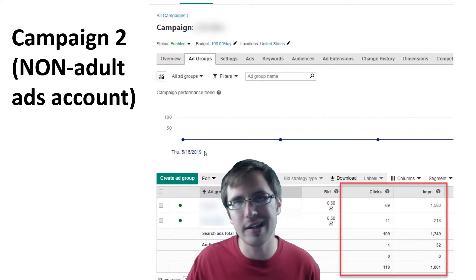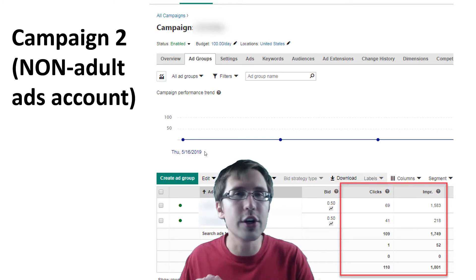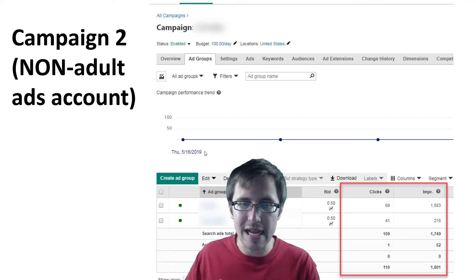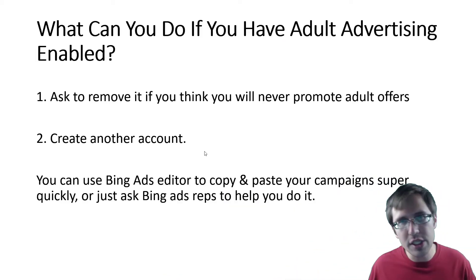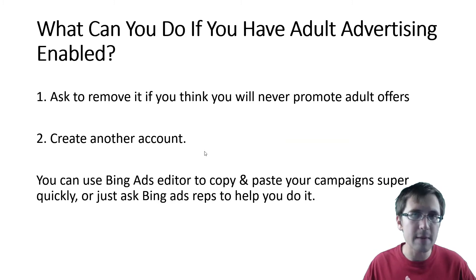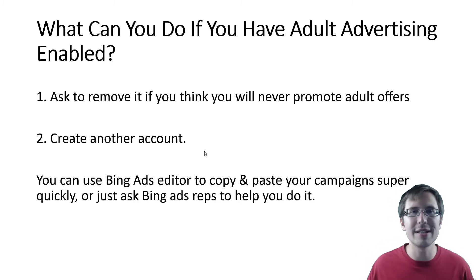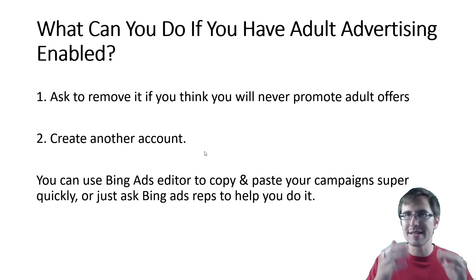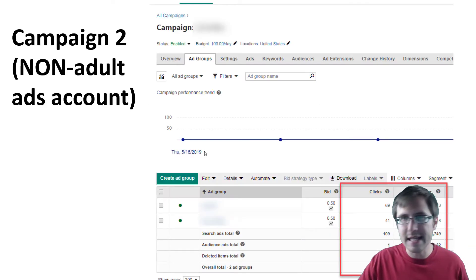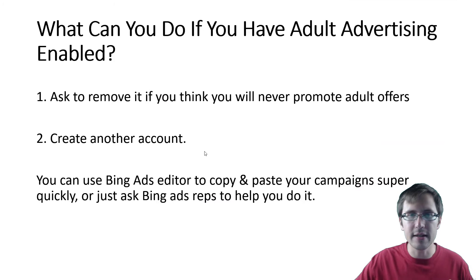If you're not promoting adult offers, or maybe you are, make sure you have a non-adult advertising account enabled. The two things you can do if you have adult advertising enabled: one, you can ask the Bing reps to remove it. Follow the same process you did to get it approved, but if you think you're not going to promote adult offers anymore, just ask them to remove the adult advertising shell from your account. That way you will start seeing these higher impression numbers again. Keep in mind this isn't on every campaign, but some campaigns are greatly affected.